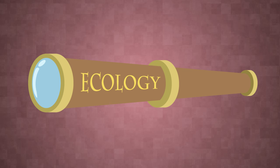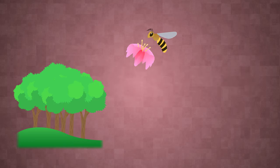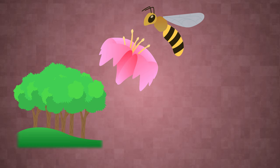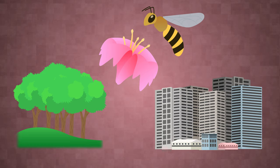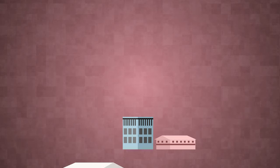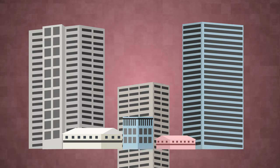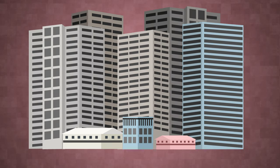Because of the breadth of ecology's scope, it is often broken into subcategories like terrestrial ecology, behavioral ecology, and urban ecology. In this video, we will focus on urban ecology, which is the study of ecology where humans are abundant and have made significant changes to the local environment, such as cities.